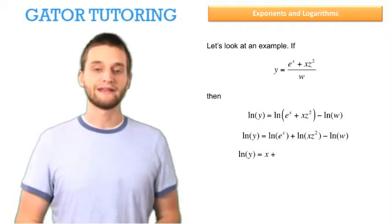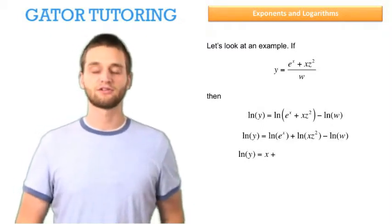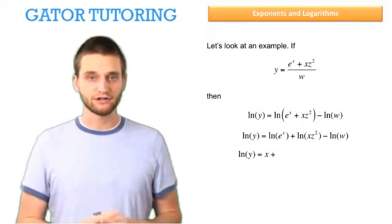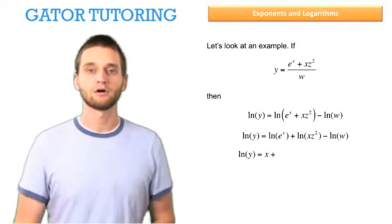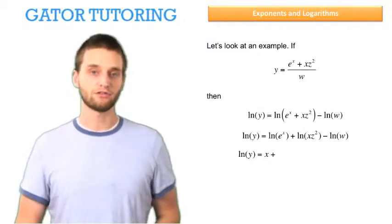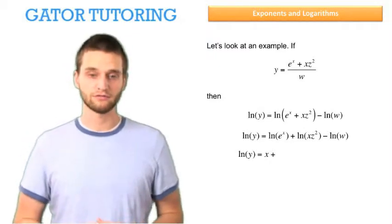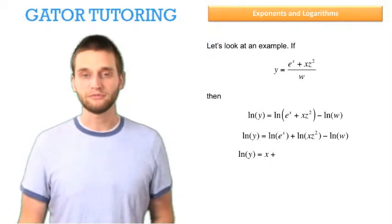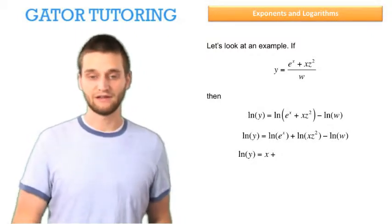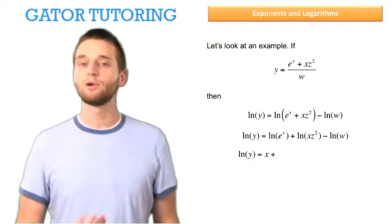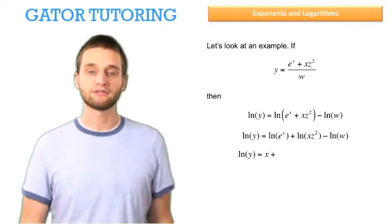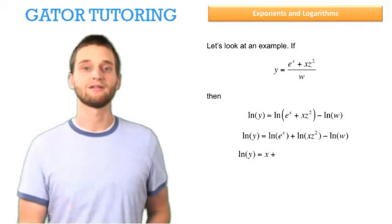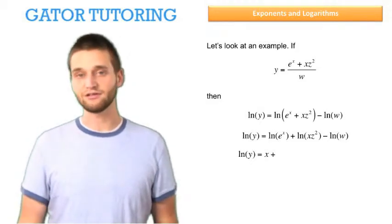Now the natural log of e to the x is x. Remember, what's the definition of the natural logarithm? The natural logarithm of the thing you're taking is the power to which e must be raised to obtain that thing. So this is really saying: what power must e be raised to to obtain e to the x? Well, x — because e to the x is e to the x. So whenever you take the natural log of an exponential, the natural log will just be that something that e is raised to. In this case, it's just x.